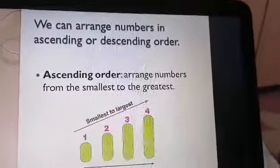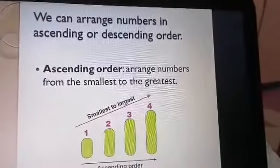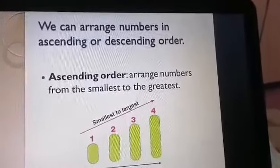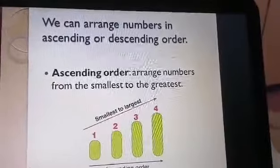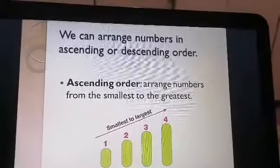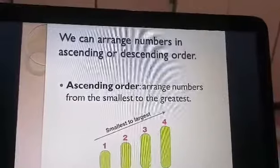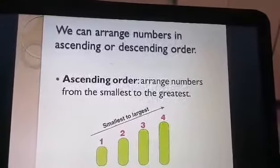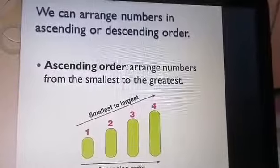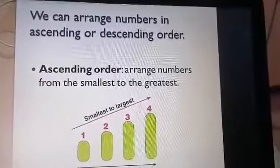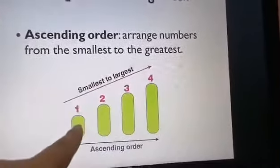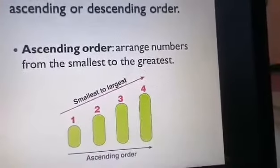Today we are going to learn how to arrange numbers in ascending and descending order. We can arrange numbers in ascending or descending order. Ascending order arranges numbers from the smallest to the largest — from the smallest to the largest number.